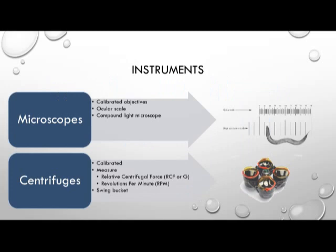What instruments are used in a clinical laboratory to detect parasitic infection? You need a good microscope with calibrated objectives, which allow you to measure the size of organisms being examined. As shown in the image, a roundworm is seen next to an ocular scale, which determines the relative size of the organism. These examinations are conducted on a compound light microscope. The centrifuge used is typically a swing bucket centrifuge, which must also be calibrated to the correct relative centrifugal force (RCF, or G-force), measured in revolutions per minute (RPM).